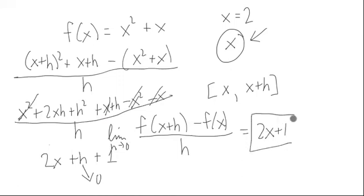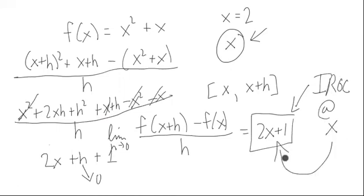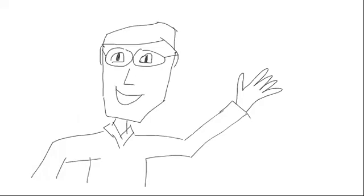The instantaneous rate of change at any x value is 2x plus 1, which makes sense because when x was 2, the instantaneous rate of change was 5, which is 2 times 2 plus 1.